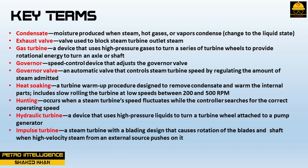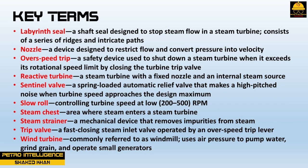Hunting occurs when a steam turbine speed fluctuates while the controller searches for the correct operating speed. Hydraulic turbine is a device that uses high pressure liquids to turn a turbine wheel attached to a pump generator. Impulse turbine is a steam turbine with a blading design that causes rotation of the blades and shaft when high velocity steam from an external source pushes on it. Labyrinth seal is a shaft seal designed to stop steam flow in a steam turbine, consisting of a series of ridges and intricate paths. Nozzle is a device designed to restrict flow and convert pressure into velocity.